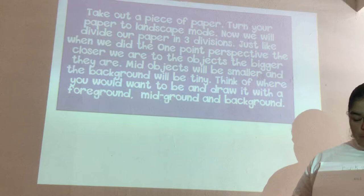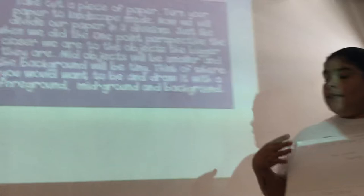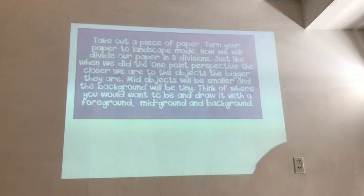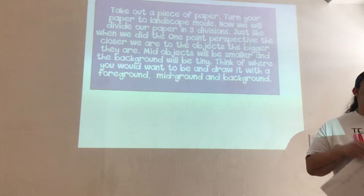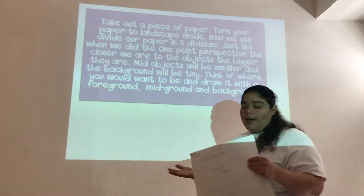Just like I told you, we did for the one-point perspective — the closer it is, the bigger the objects, and in the background the objects are tinier. Now what I want you to do is think about where you would want to be right now. If you could be anywhere, I want you to draw it with the foreground, the middle ground, and the background.